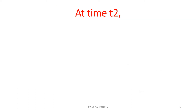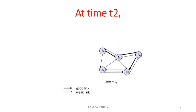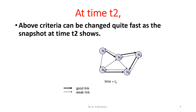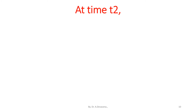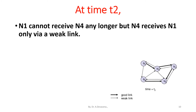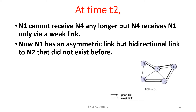At time t2, here is a representation of transmission of data between the five nodes. Network criteria can change quite fast, as the snapshot at time t2 shows. N1 cannot receive N4 any longer, but N4 receives N1 only via a weak link. Now N1 has an asymmetric but bidirectional link to N2 that did not exist before.